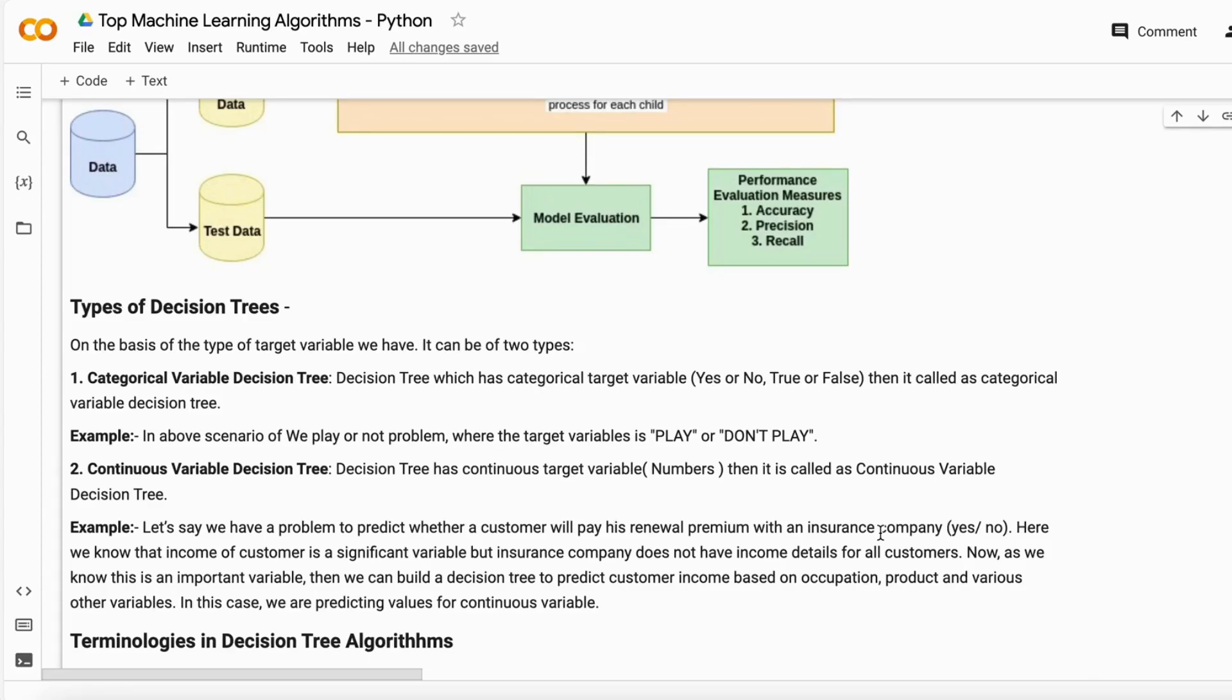Now, as we know, this is an important variable. Then we build a decision tree to predict the customer income based on the occupation. First, we build a regression decision tree to predict the income. And then on the basis of that, we are predicting the insurance company, whether it will pay his renewal premium with the insurance company, yes or no. So this is kind of both problems we have regression as well as classification.